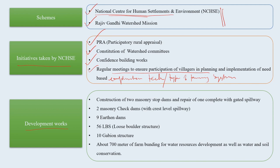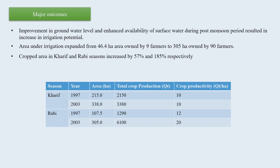The development works carried out in that area included two masonry stop dams with a gated spillway, two masonry check dams, nine earthen dams, 56 loose boulder structures, ten gabion structures, and about 700 meters of farm bunding. All of these were carried out under this scheme. A major outcome was improvement in the groundwater level and enhanced availability of surface water during the post-monsoon period — the critical period. Once the monsoon goes off, if rain is not stored, you may face a water problem for the next crop.